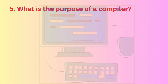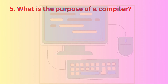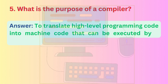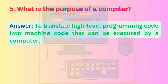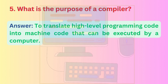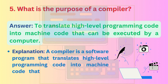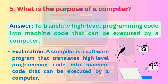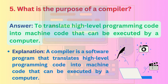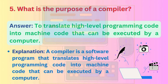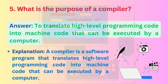Question 5: What is the purpose of a compiler? Answer: To translate high-level programming code into machine code that can be executed by a computer. Explanation: A compiler is a software program that translates high-level programming code into machine code that can be executed by a computer.